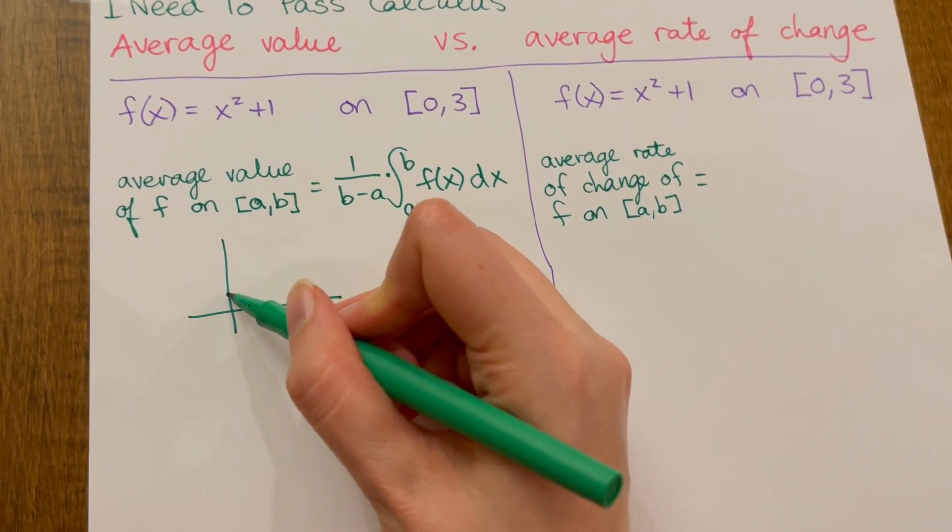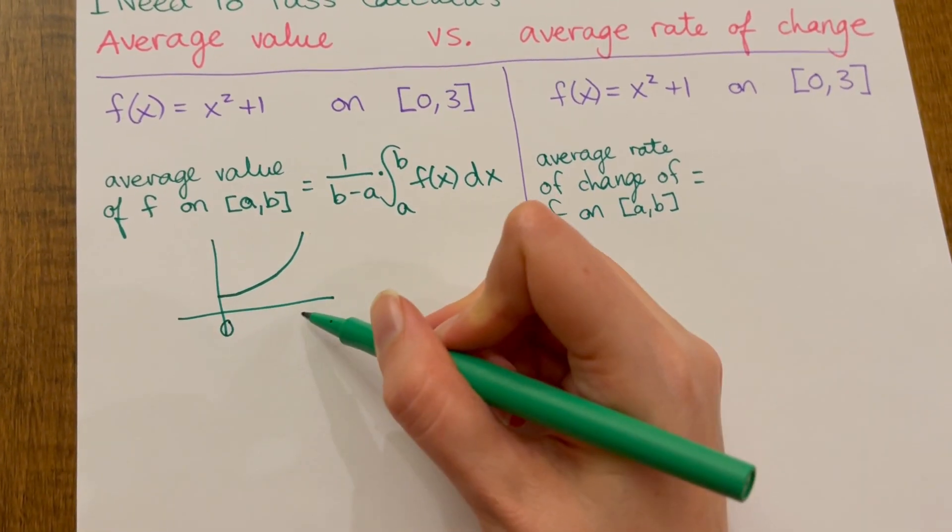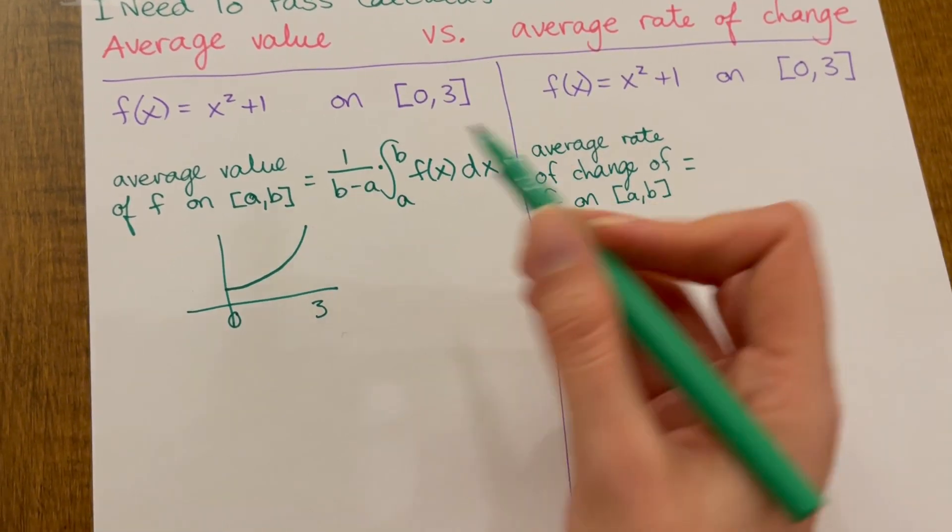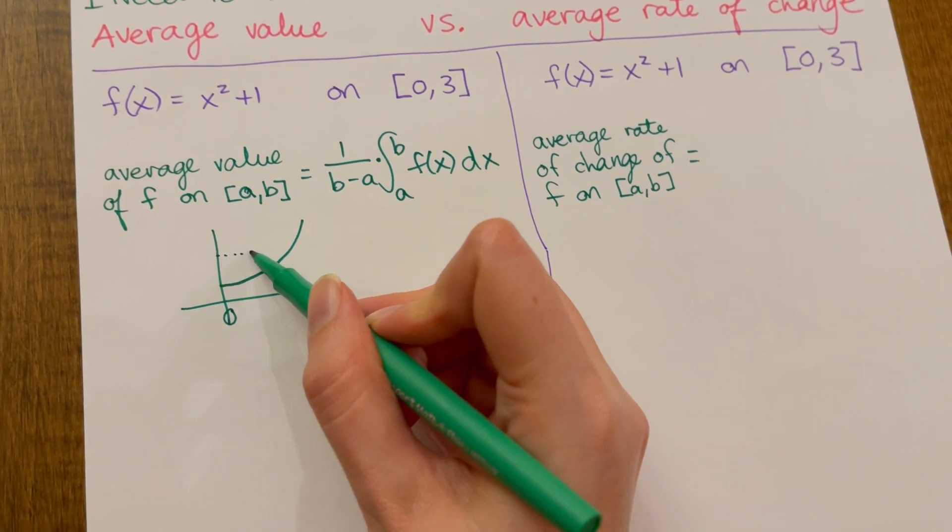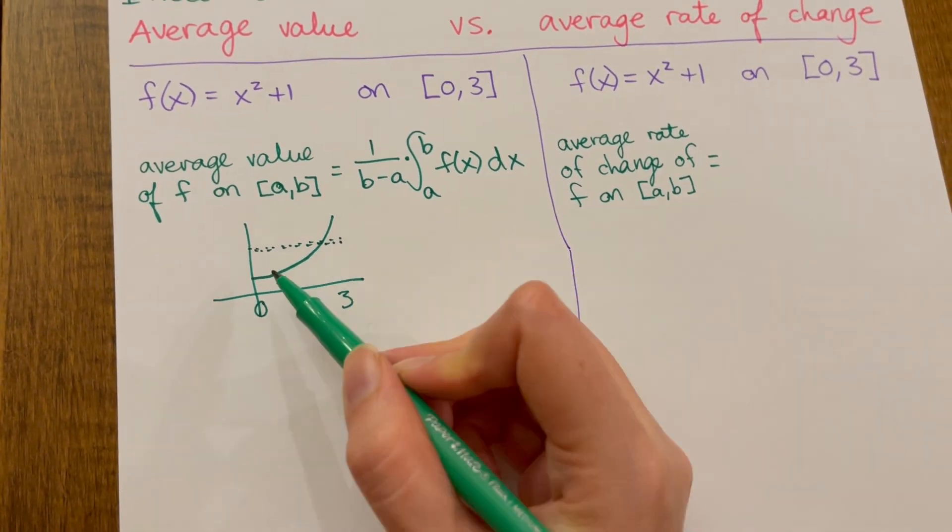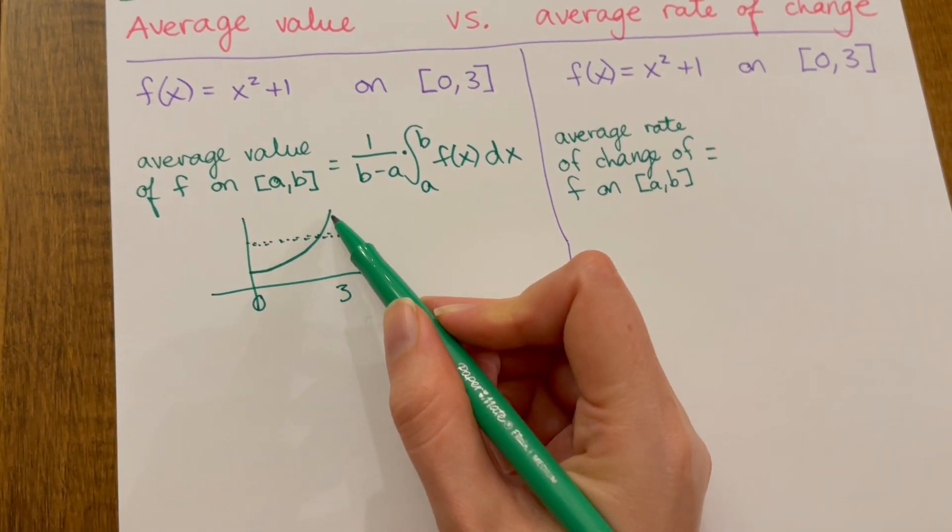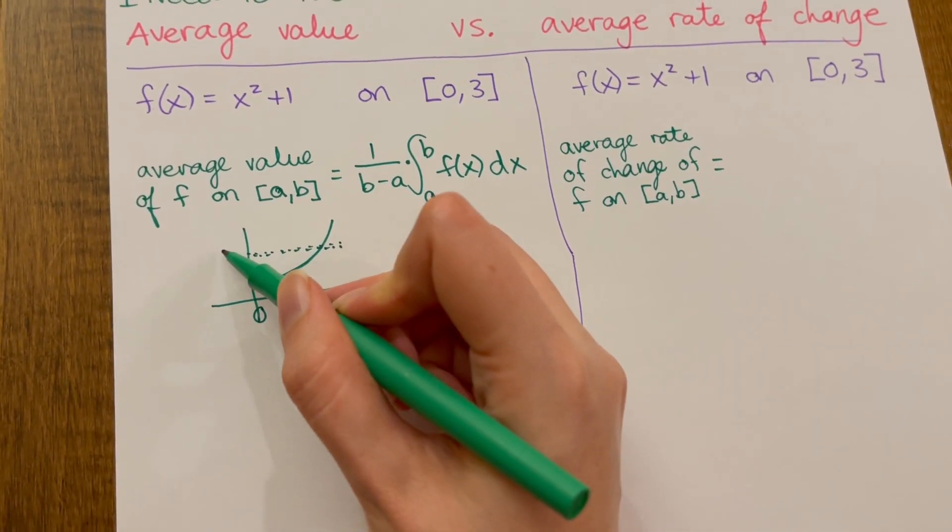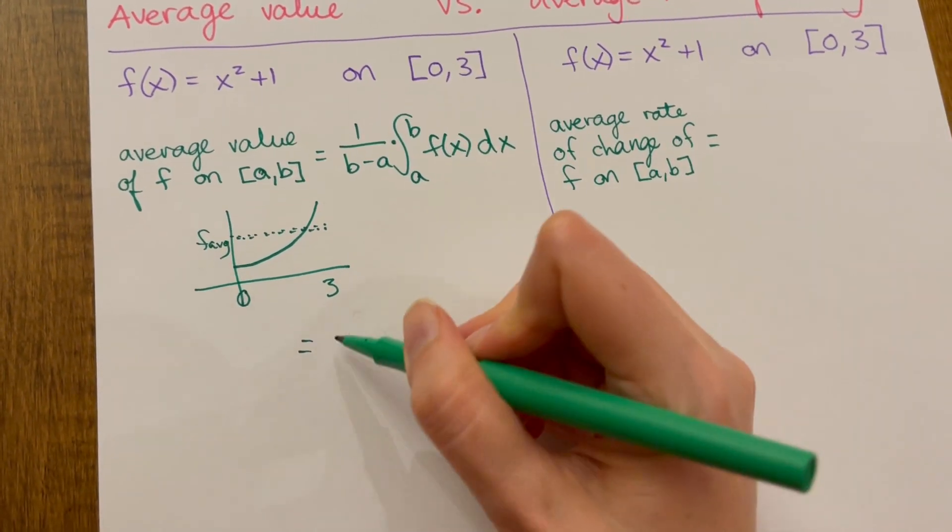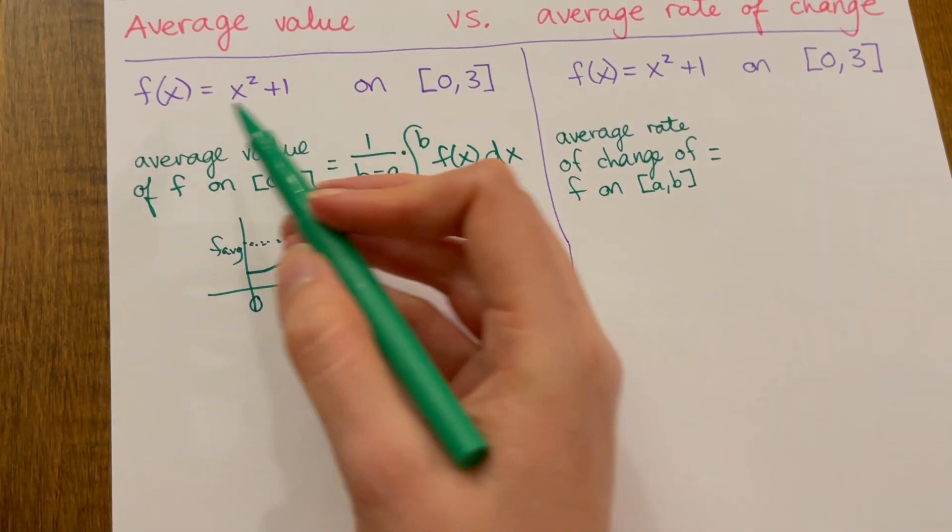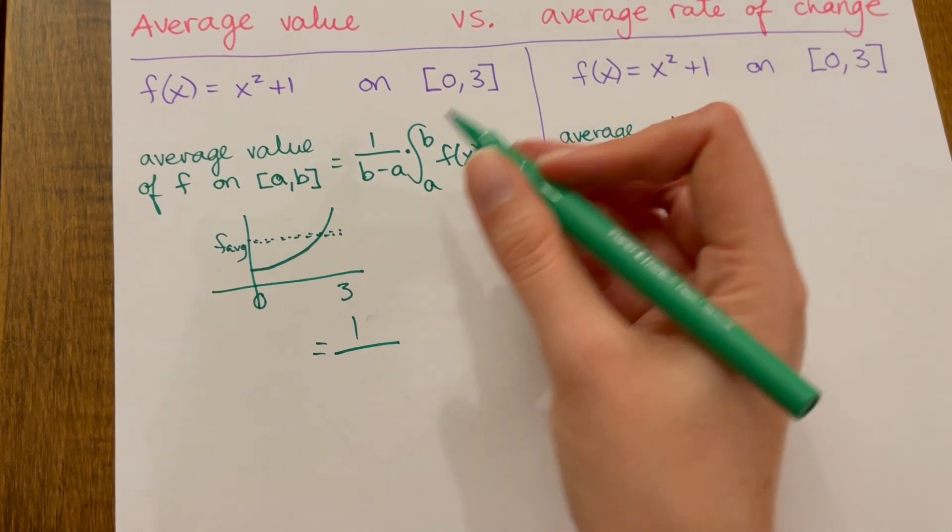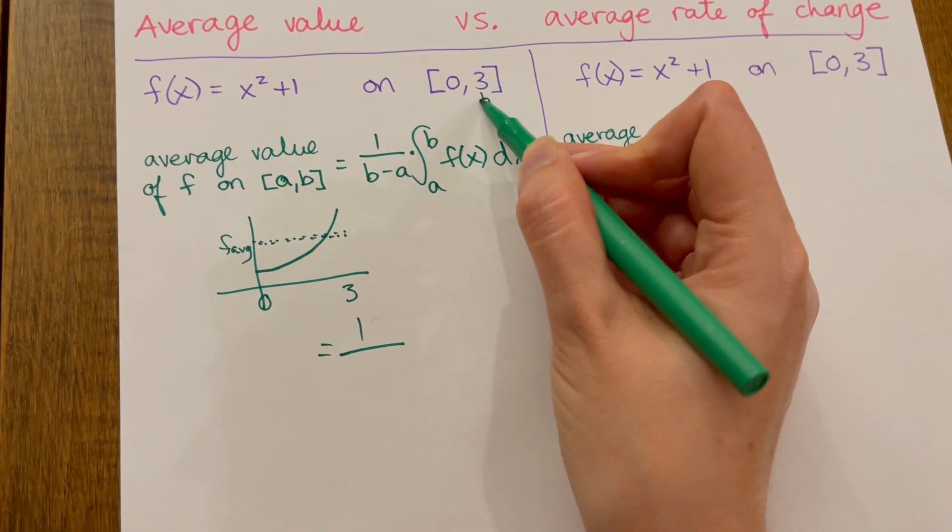This is x squared plus 1, a shifted up parabola. We're going from 0 to 3. So this final answer, this number times this number, is going to be this average height. There are all these heights for this function from 0 to 3 and we're going to find the average value.